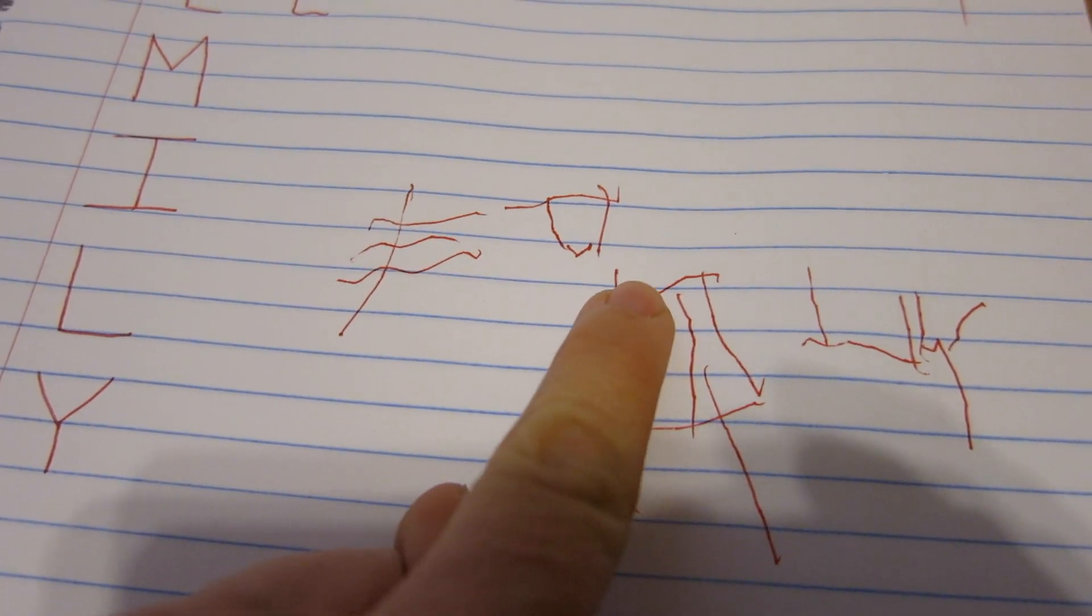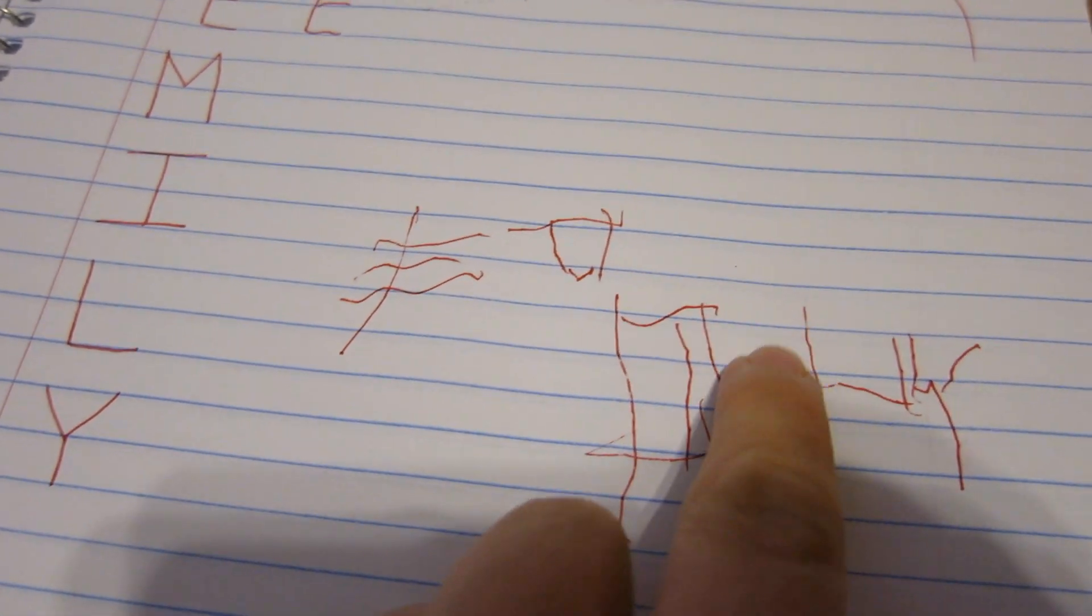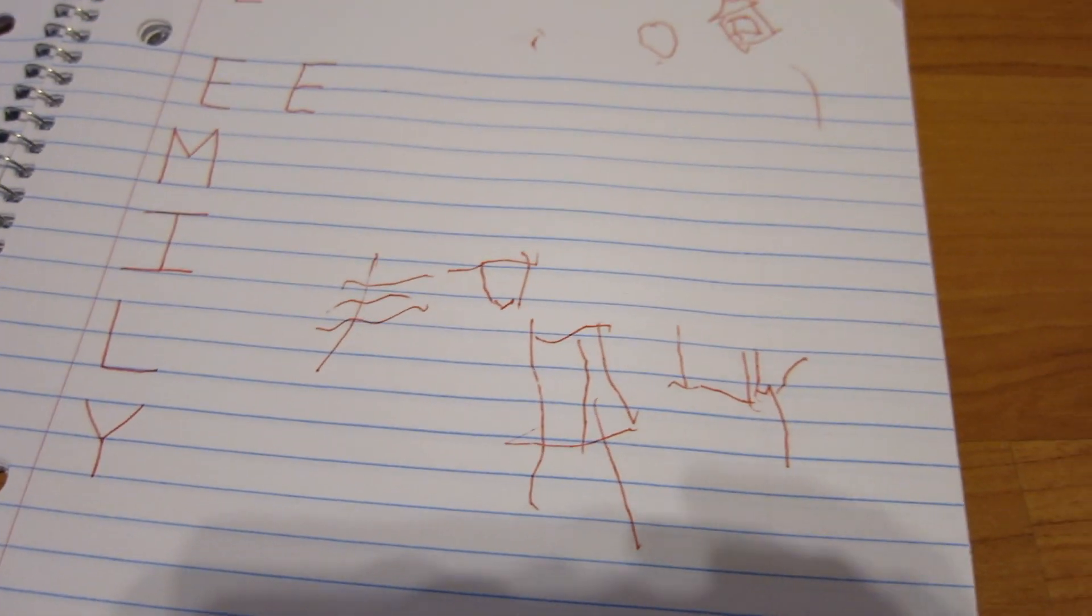There's her E, M. Here's her I. She kind of added some lines to it. There's her L. And there's her Y. You're so smart!